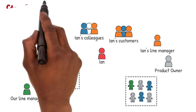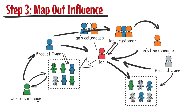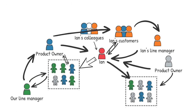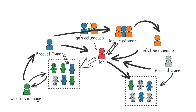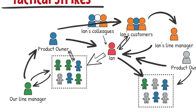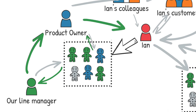After identifying the allegiances, step three is to map out the influences. We simply draw arrows to represent the direction of influence, and the thicker the line, the more influence that person holds. Influence could be formal, such as management power, or informal, such as respect. Once we see the lines, we can start to look for tactical strikes. For example, we may be able to use our influence with the product owner and our line manager's influence with the product owner to indirectly influence Ian, reducing his influence over us.